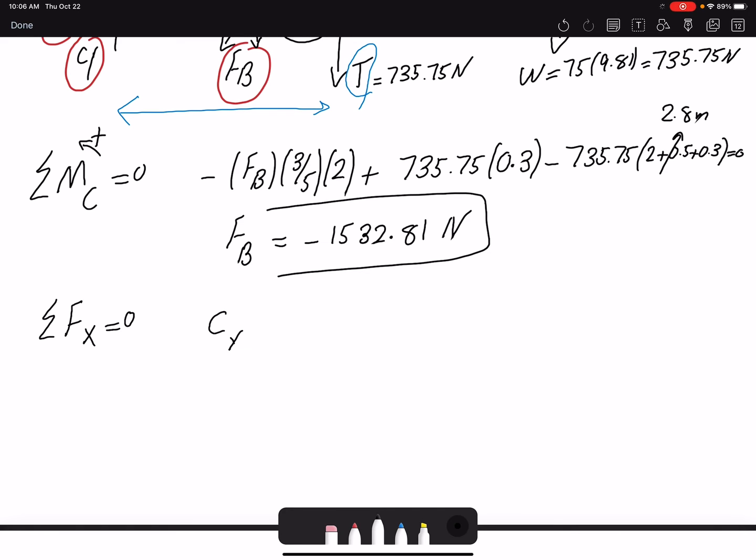So I have CX minus 4 over 5, which gives me the horizontal component of force FB. Then I have negative tension equals zero. I can replace these values. I know the values. This is 735.75, and FB is a negative value. So FB, that's the value that we found for FB. So technically, CX plus 4 over 5. So CX will be negative 490.5 newtons. Negative value indicates the direction we assumed is incorrect.